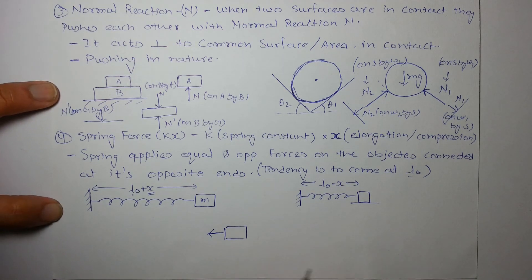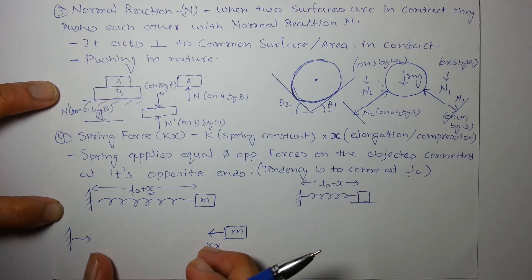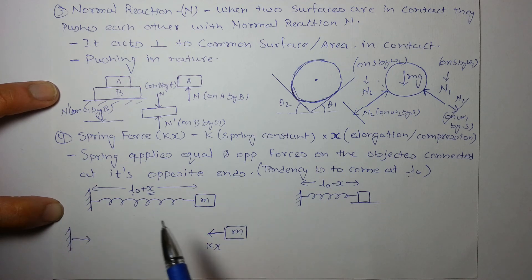Again, the force on the wall will also be towards this. Again, this force will try to pull block and wall so that the length of the spring will become natural again. So this force will be KX.